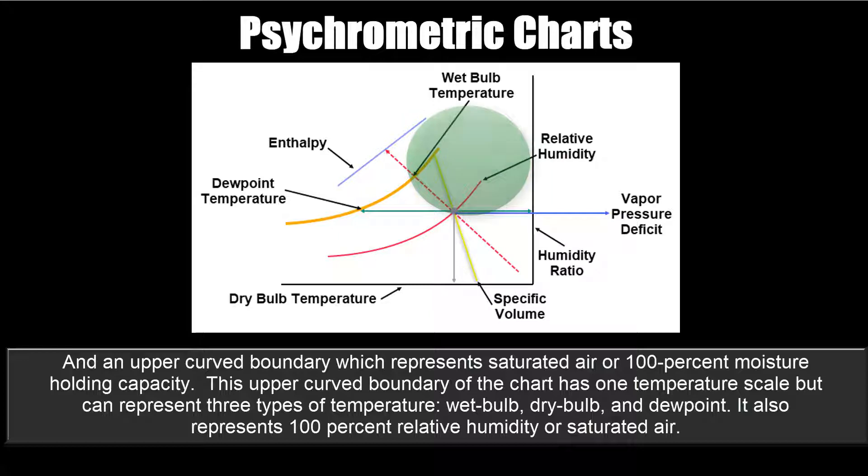This upper curve boundary of the chart has one temperature scale, but can represent three types of temperature: wet bulb, dry bulb, and dew point. It also represents 100% relative humidity, or saturated air.